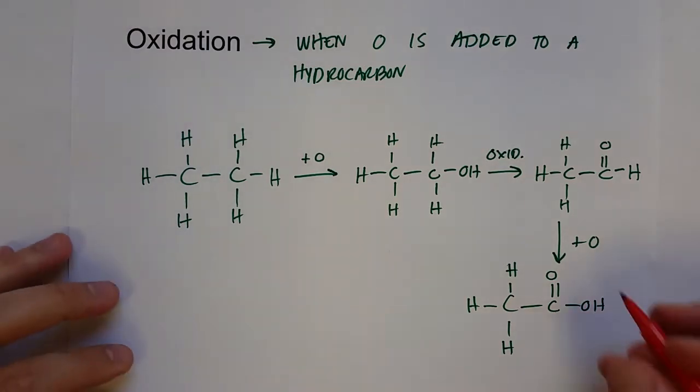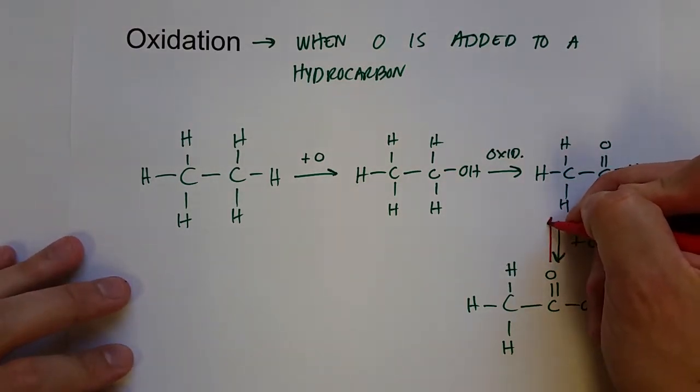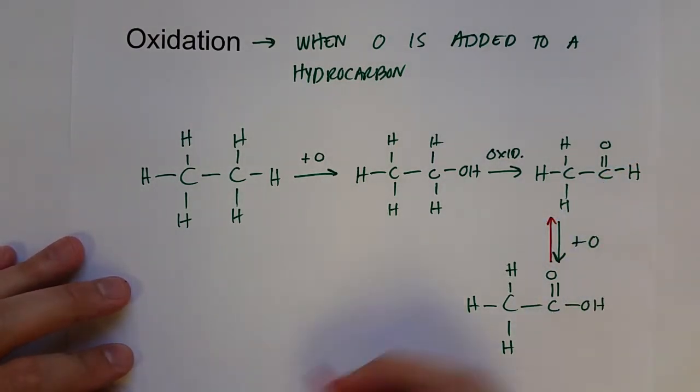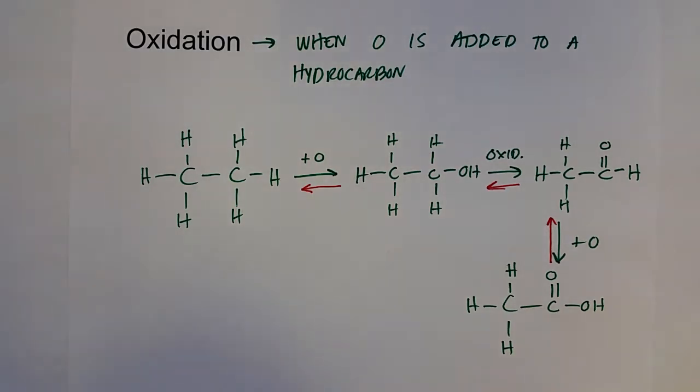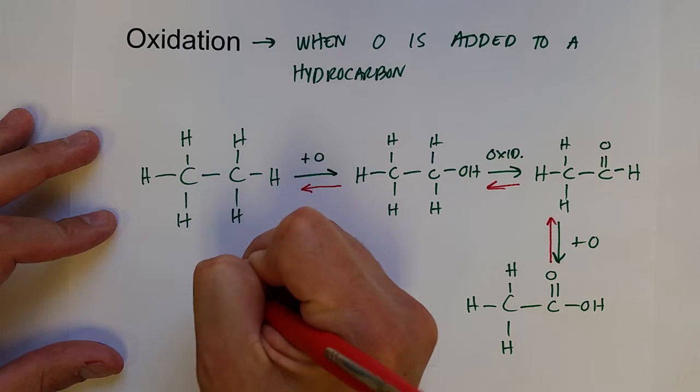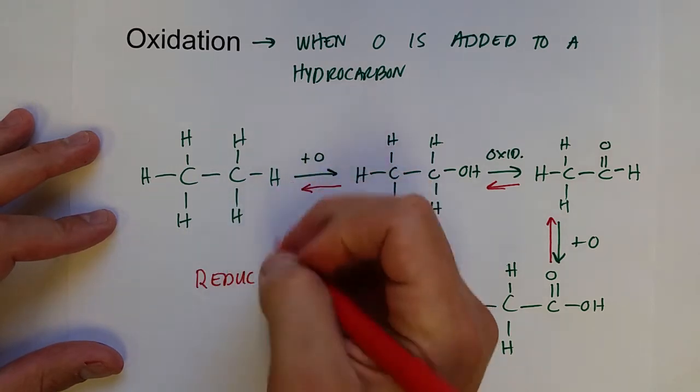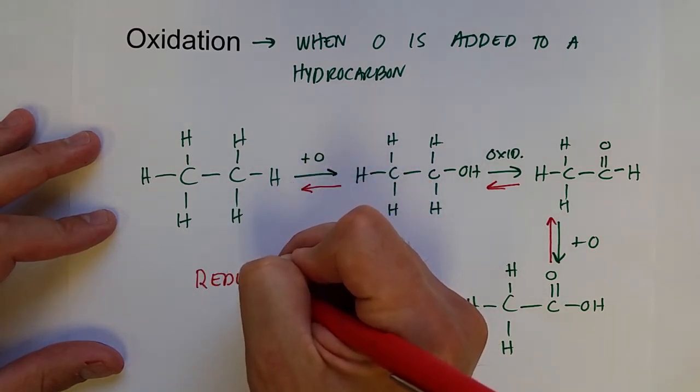The reverse, if you're going in the reverse, you go from a carboxylic acid to an aldehyde, an aldehyde to a hydroxyl group or an alcohol, and then all the way back to an alkane. That is called reducing the organic compound or reduction.